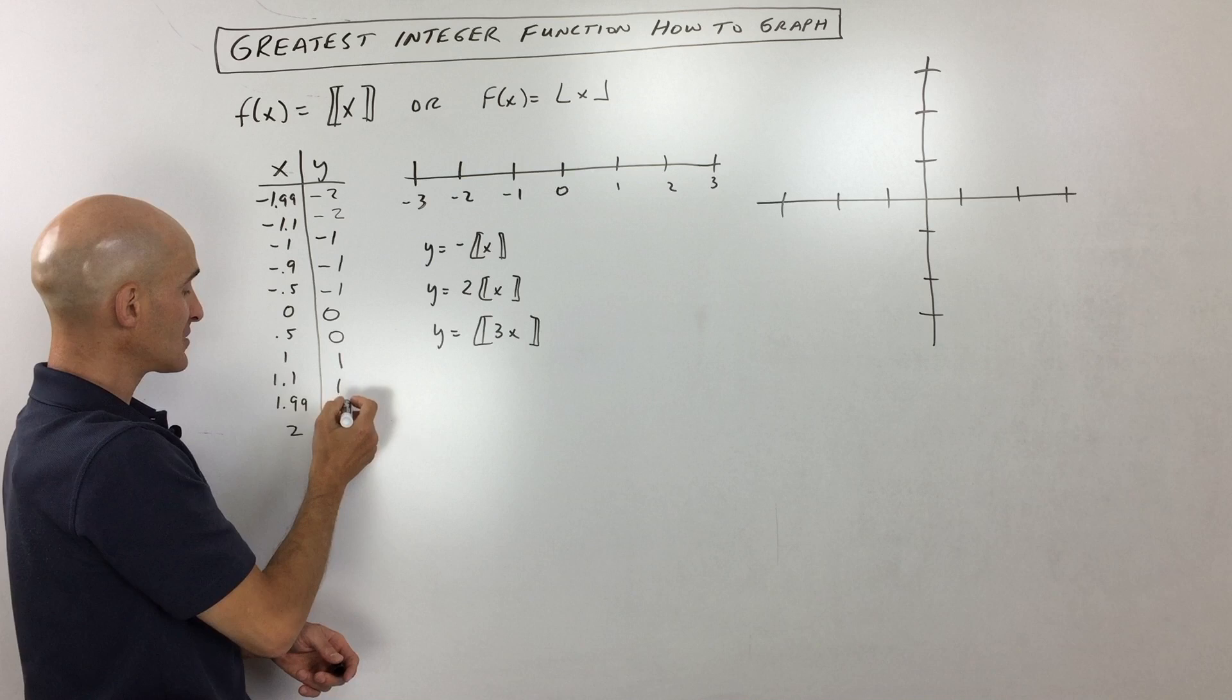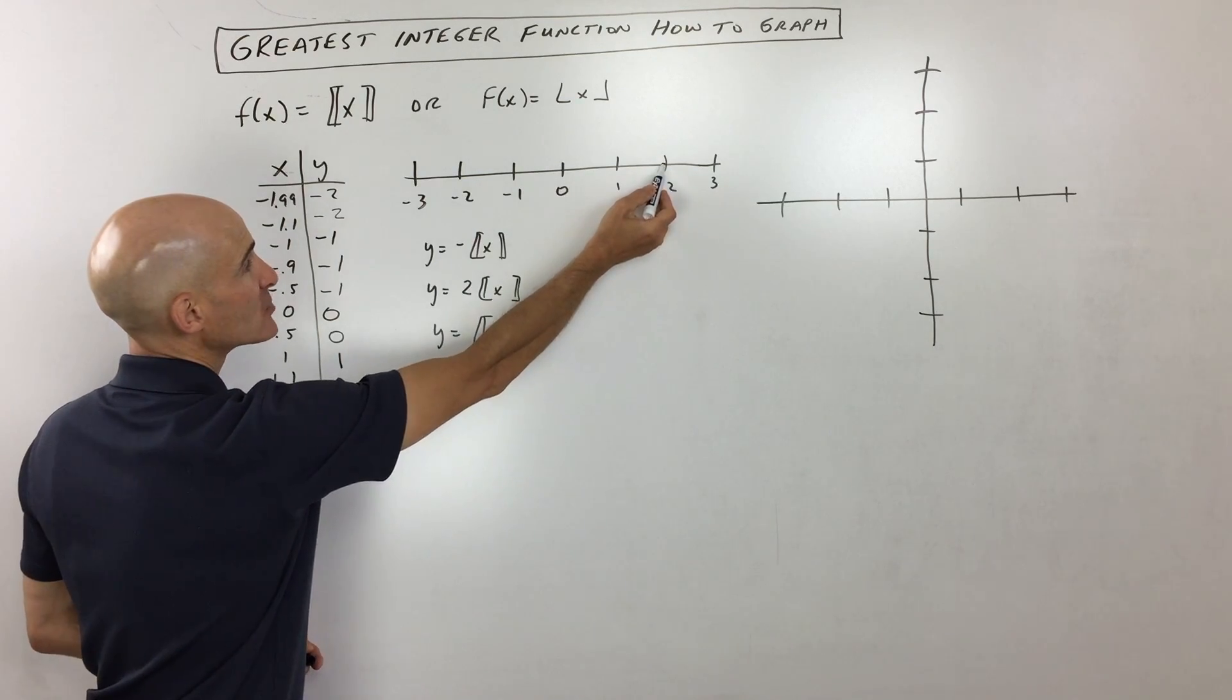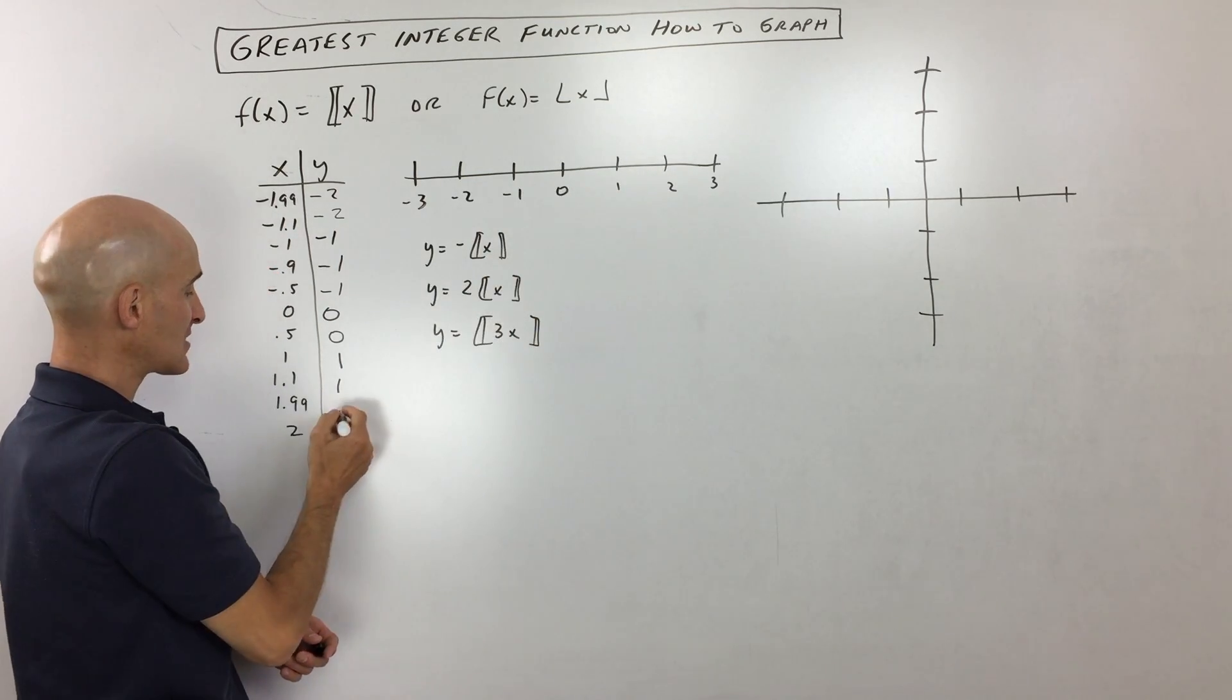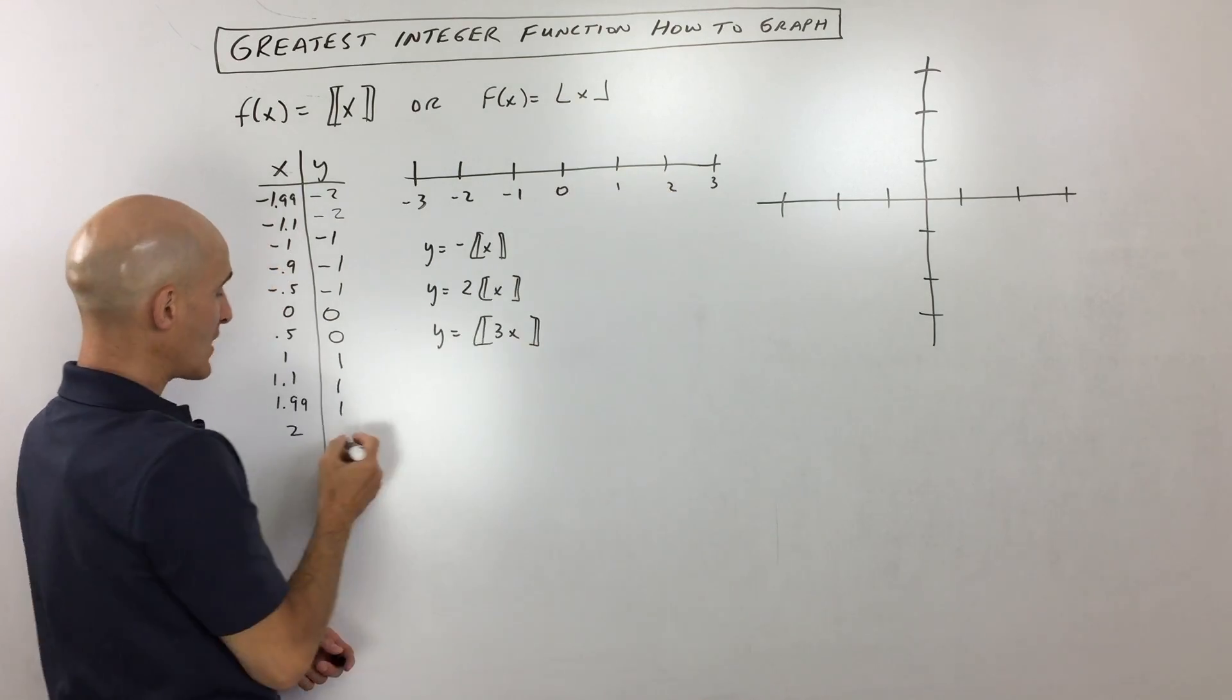1.1, you round again down to 1. 1.99, almost to 2, but you have to round down to that next integer there. So that's 1. And then 2, we're at 2.